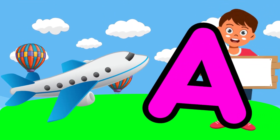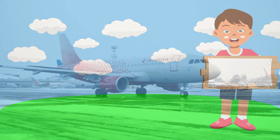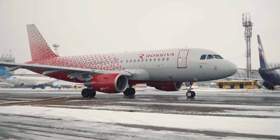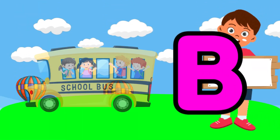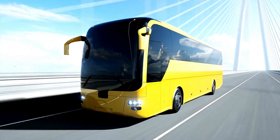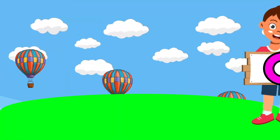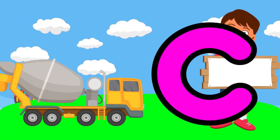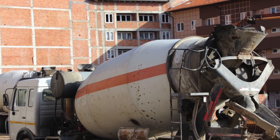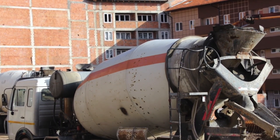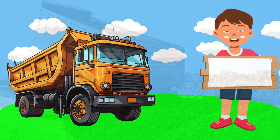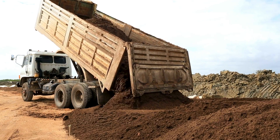A is for airplane, airplane. B is for bus, bus. C is for concrete mixer, concrete mixer. D is for dump truck, dump truck.